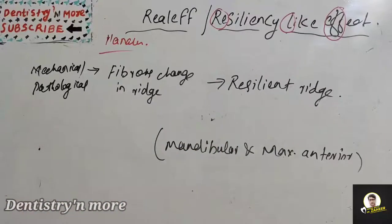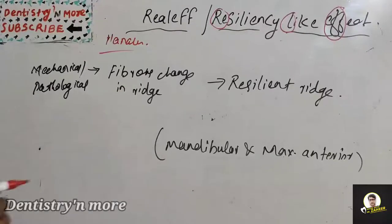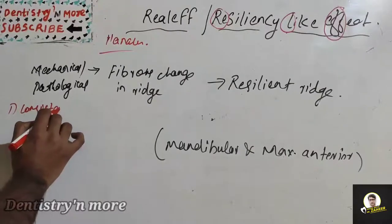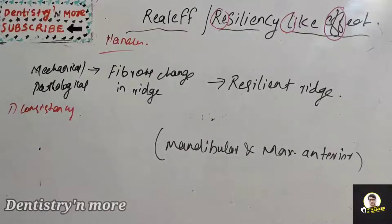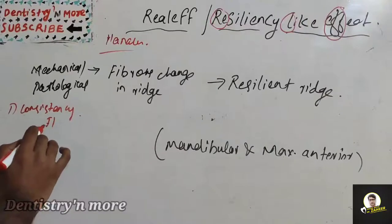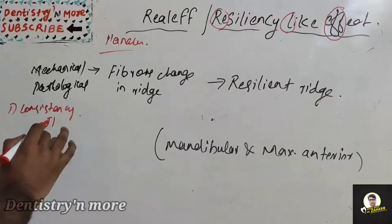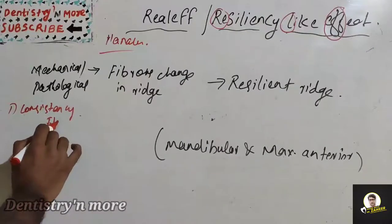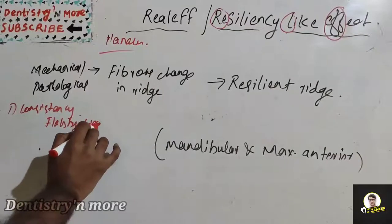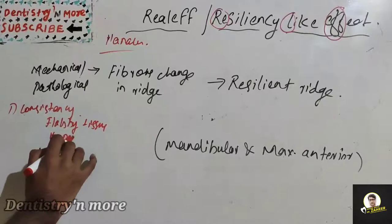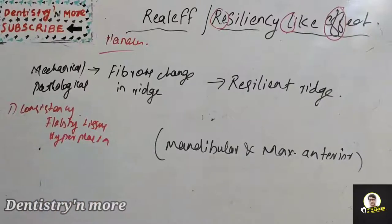There are many factors affecting the Realeff. One is the consistency of mucosa, meaning flabby ridge or hyperplasia of tissue. All those things will create problems for taking impression or creation of a good retentive complete denture. Flabby tissue, hyperplasia of tissue, and excess bone loss during extraction affect the ridge.